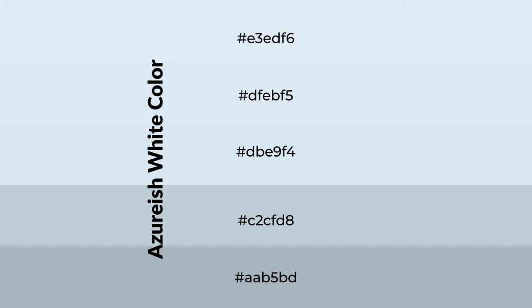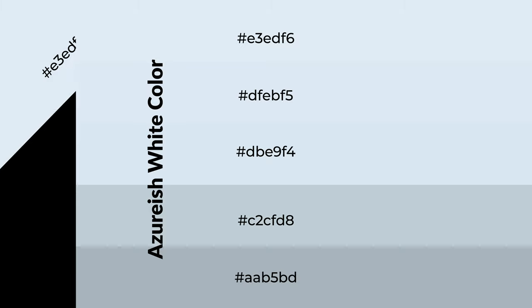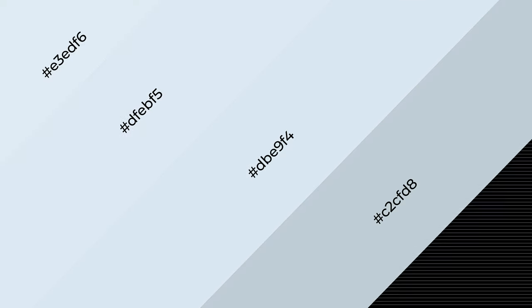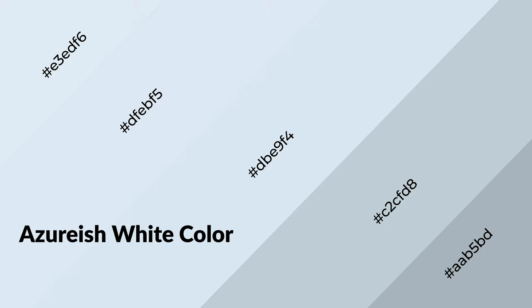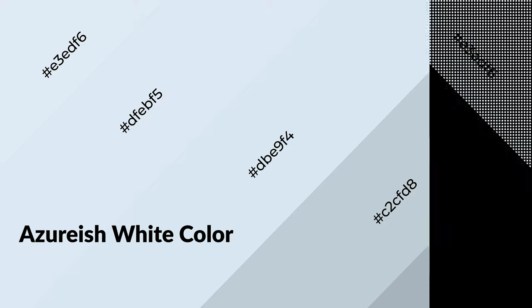To generate shades of a color, we add black to the color. Shades are used in patterns, 3D effects, and layers, creating depth and drama. Azure-ish white is a cool color and it emits calming, serene, soothing, and refreshing emotions.